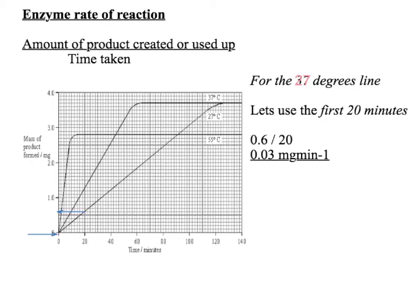So for the 27-degree line — the shallowest line. This is a straight line, so we could use any time along here. I've just used the first 20 minutes because that makes it straightforward. The amount of product created in the first 20 minutes: read up from 20 minutes, read across, and that gives us 0.6 milligrams. Using the formula: amount of product (0.6) divided by time taken (20 minutes) gives us 0.03 milligrams per minute. That is the enzyme rate of reaction for 27 degrees.